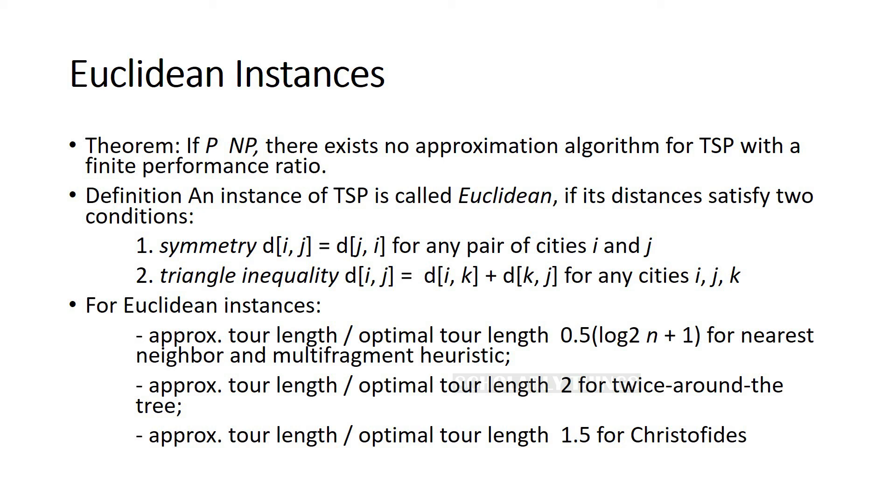For Euclidean instances, the approximation tour length over optimal tour length is 0.5 log base 2 of n plus 1 for nearest neighbor and multifragment heuristic. It is 2 for twice around the tree, and then it is 1.5 for Christofides algorithm.